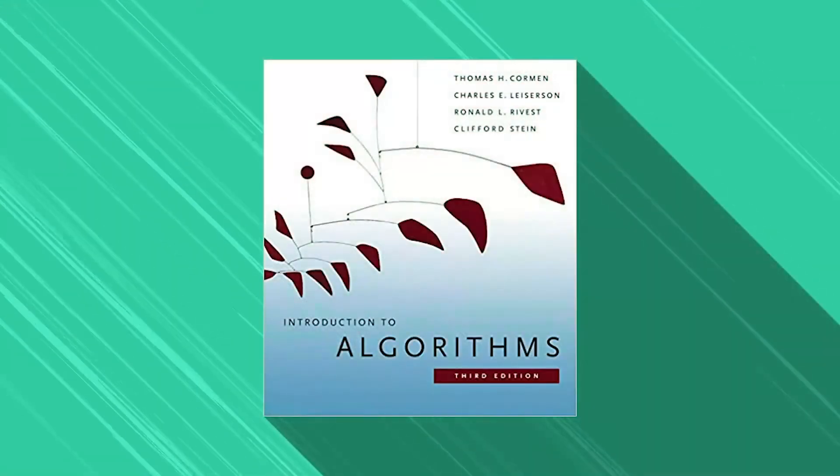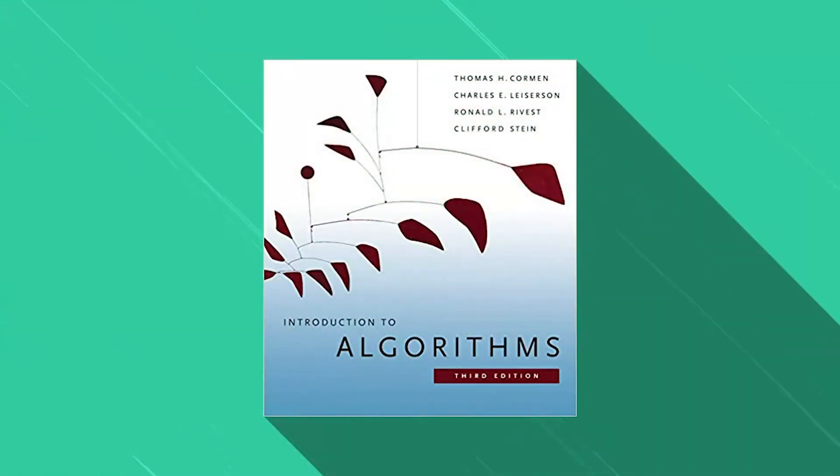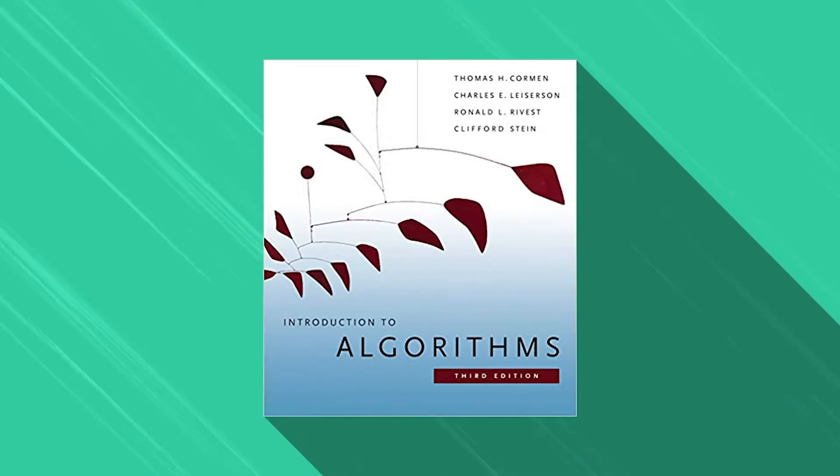First, we have Introduction to Algorithms. Thomas C. Cormen is the author of this book, and it's one of the most popular books to learn algorithms. However, there is a method of reading this book, otherwise you can hardly understand it.